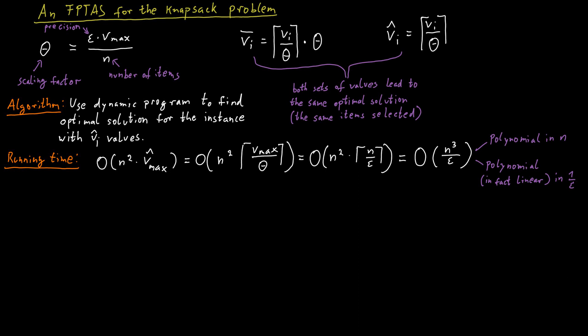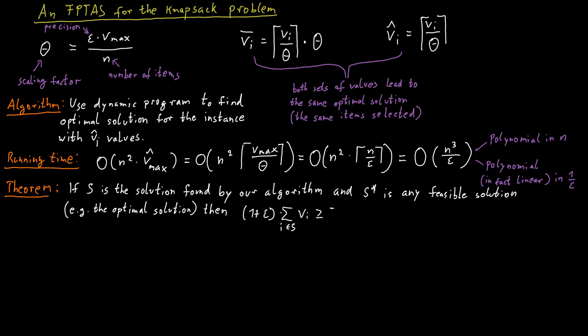We claim the following. If S is a solution found by our algorithm, where S is simply the set of items selected by the algorithm, and S star is any other feasible solution, including possibly the optimal one, then the value of our solution S is within a 1 plus epsilon factor of the value of the solution S star. And so the way to write this is to simply say that if we multiply the value of our solution S with 1 plus epsilon, then this is at least as big as the value of the solution S star. And we are now going to prove this claim in just a few lines.